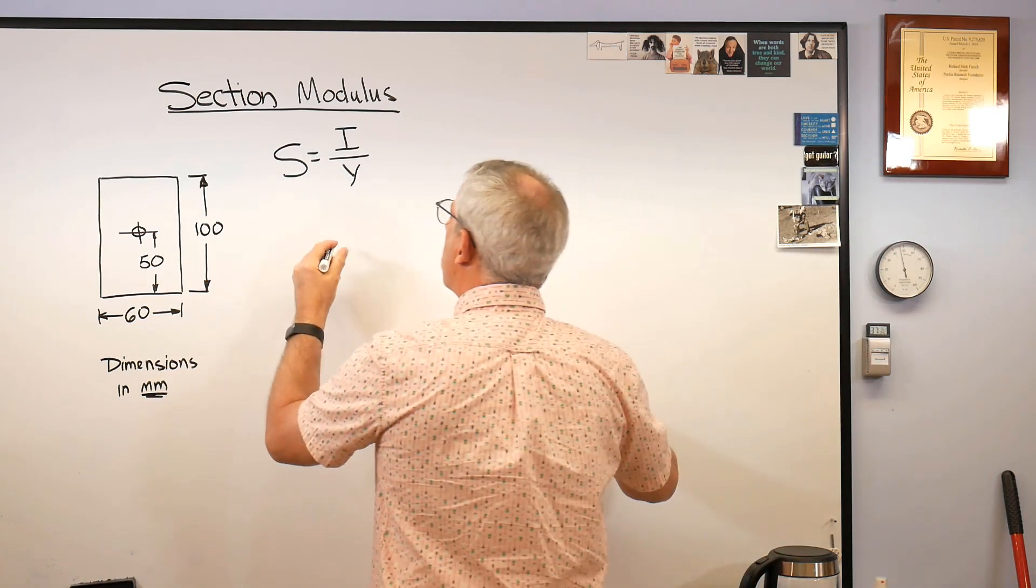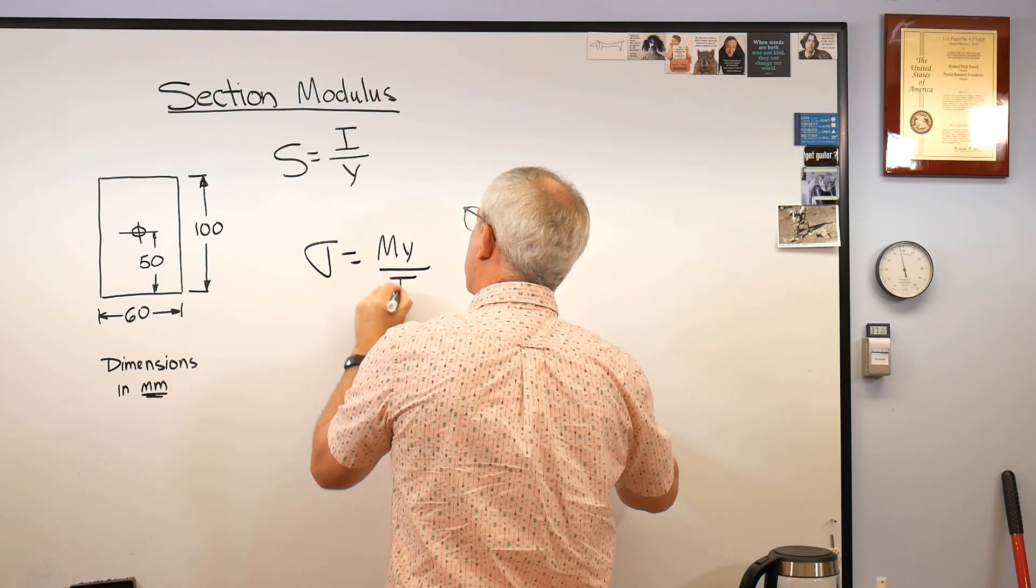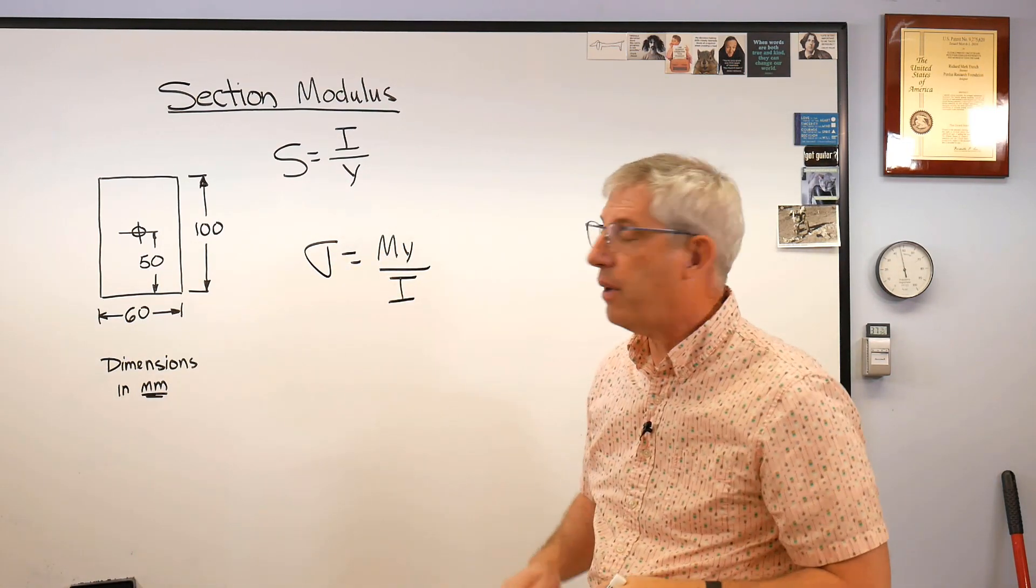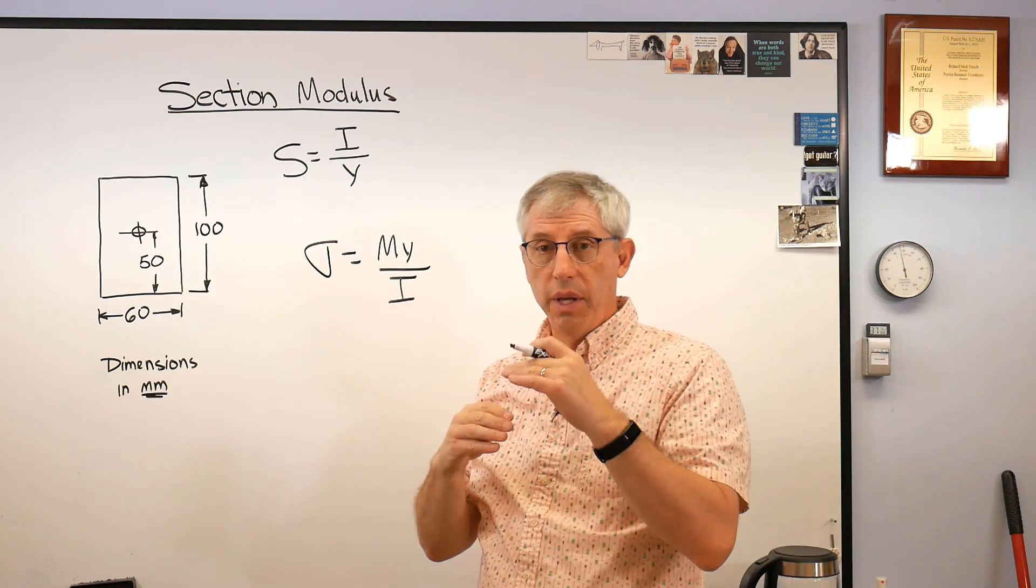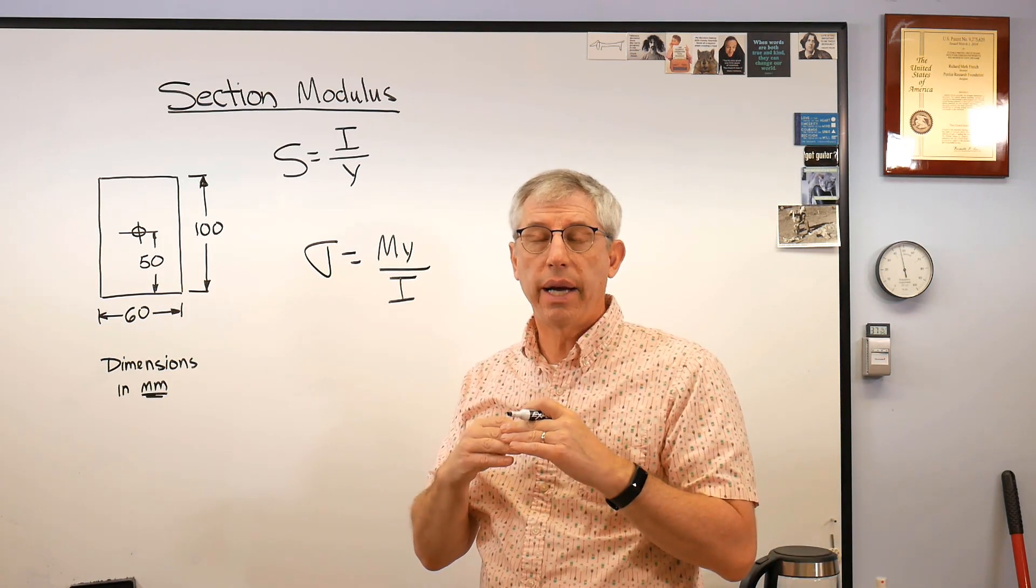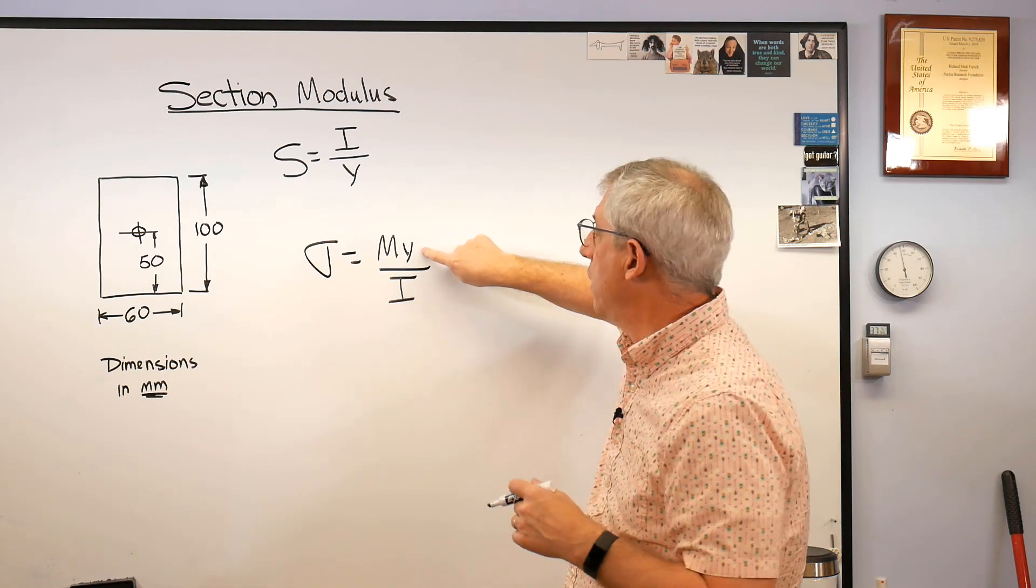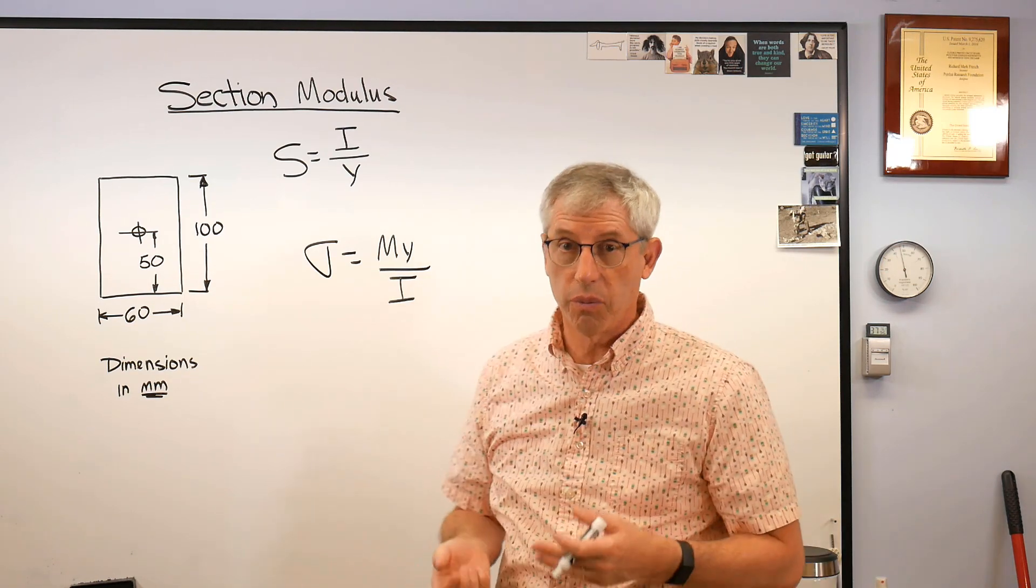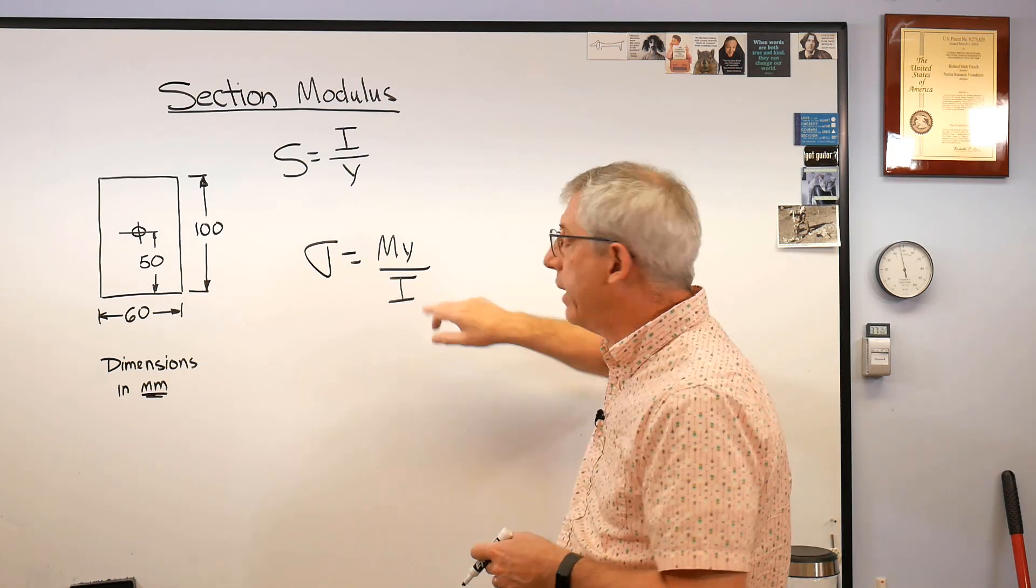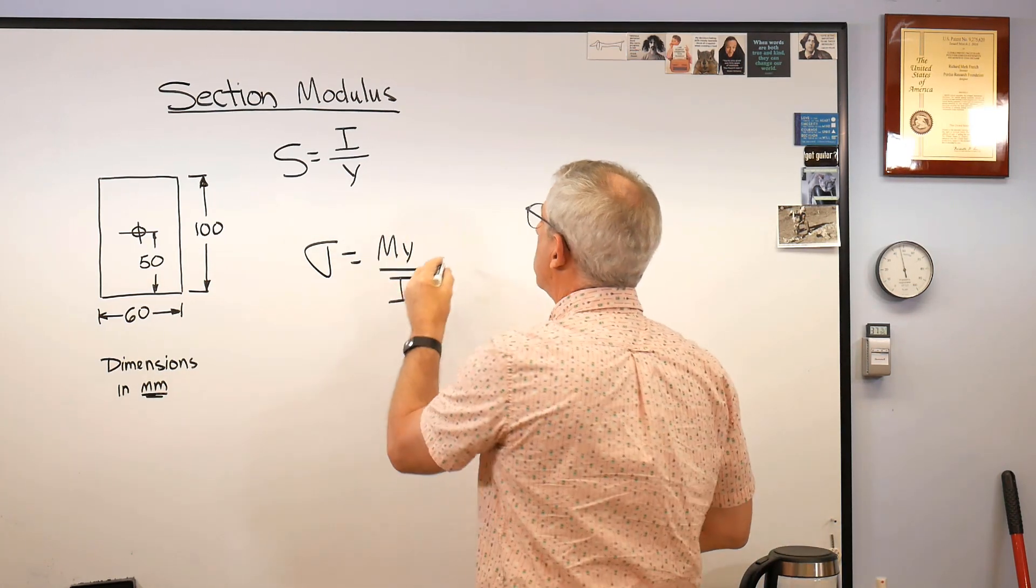If you look at the normal stress on a beam it's M Y over I, where M is the moment, Y is the distance from the elastic axis or the centroid, and you can set this to whatever you want. Normally you make this the outside of the beam because that's where the stress is the highest. That's where you're worried about it failing. And I is the area moment of inertia. Well I over Y, that's section modulus.